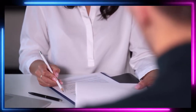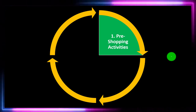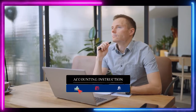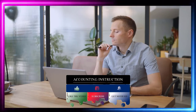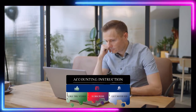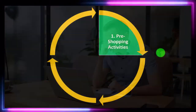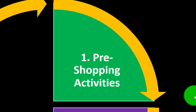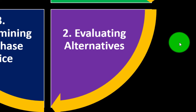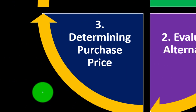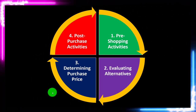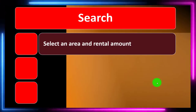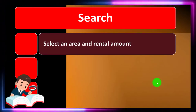Given that it is costly to move, you've got to factor renting in as a fairly significant decision, and you'll want to put more time into it. We can apply our four-category buying framework to renting as well: pre-shopping activities, evaluating the alternatives, determining the purchase price, and post-purchase activities — all applicable to the rental process.